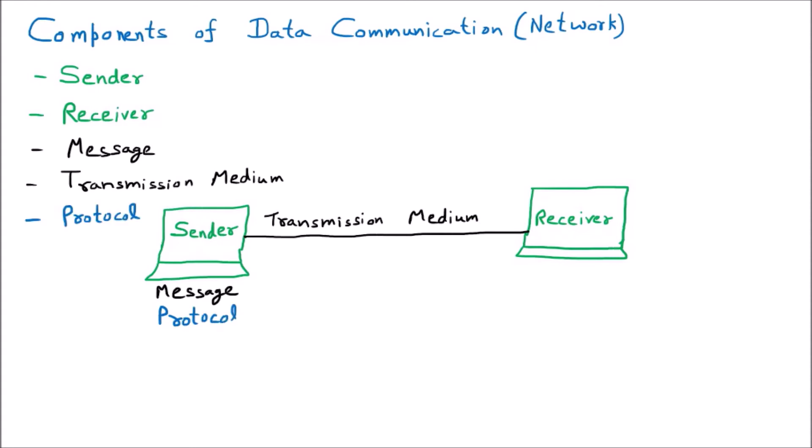Let us understand everything one by one. First, we have the message. A message is some kind of data or information that can be communicated — it can be any image, audio file, video file, number, or anything. This message is with the sender.